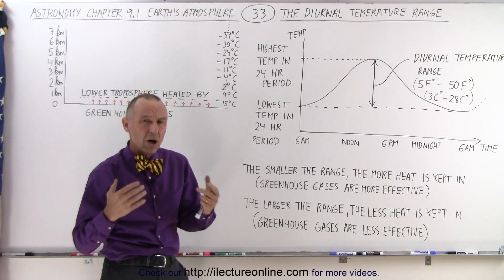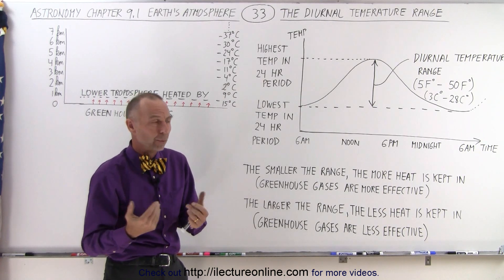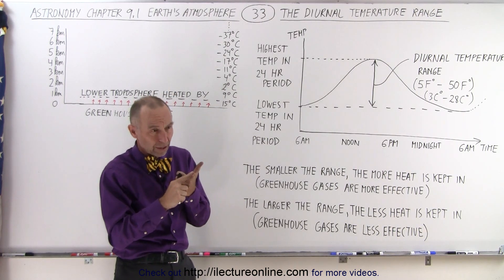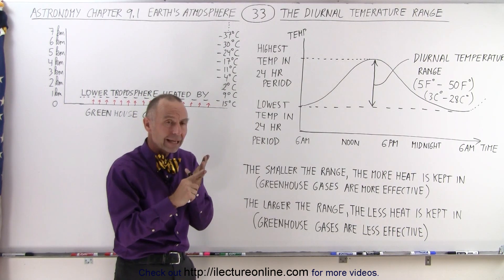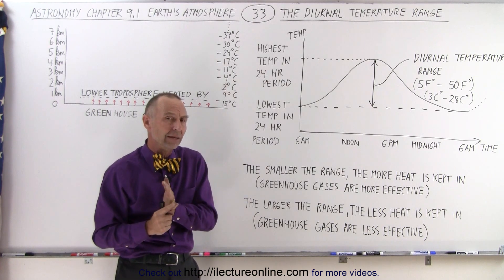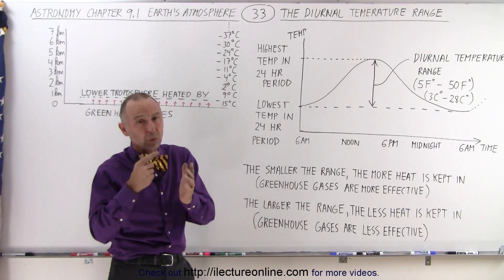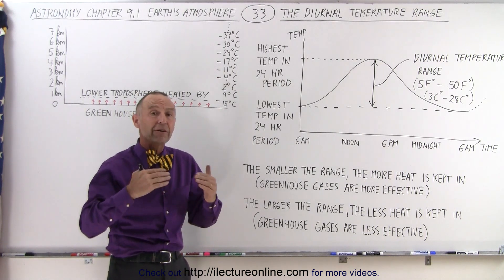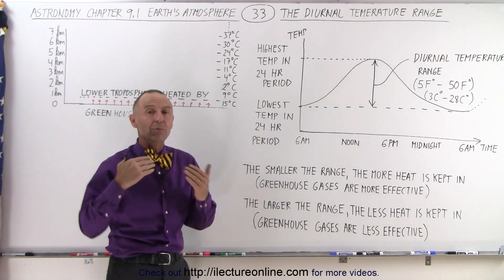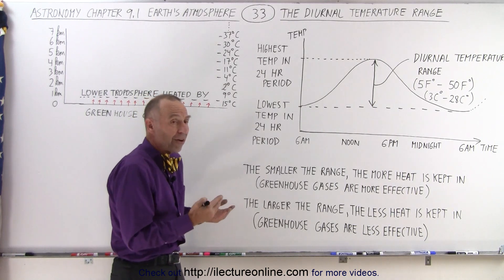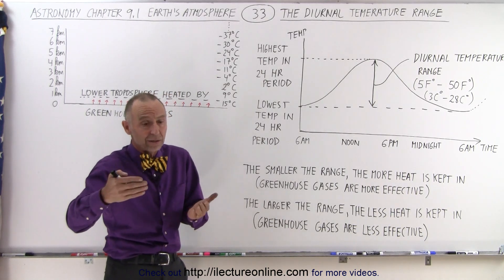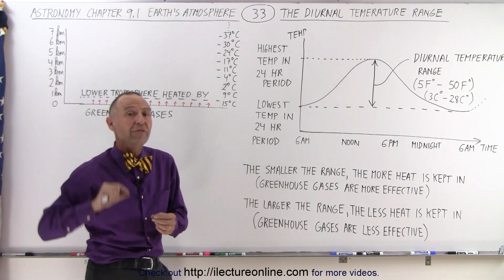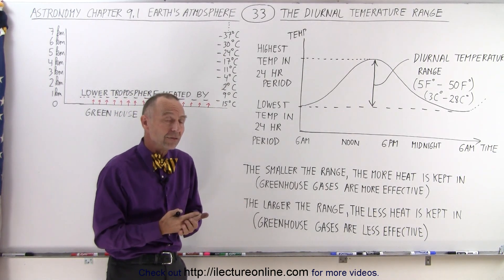Now, what would cause that enormous difference? We know that there are five major greenhouse gases: water vapor, carbon dioxide, ozone, methane, and nitrous oxide. The two major ones are water vapor and carbon dioxide. But only one of those five can vary tremendously in atmospheric concentration. The others, from day to day, night to night, week to week, even year to year, show only very small differences in concentration.